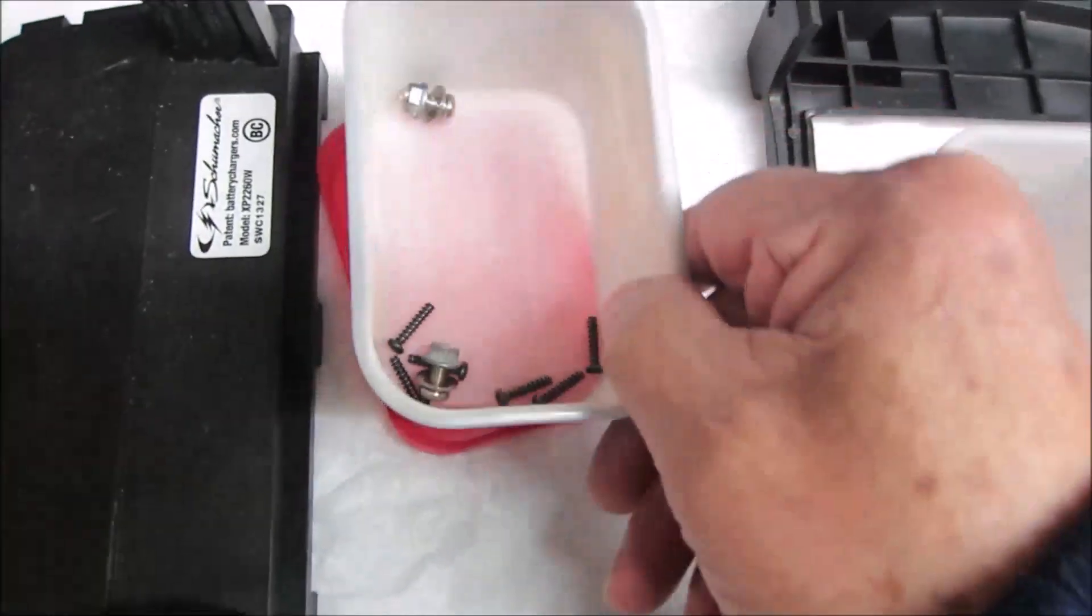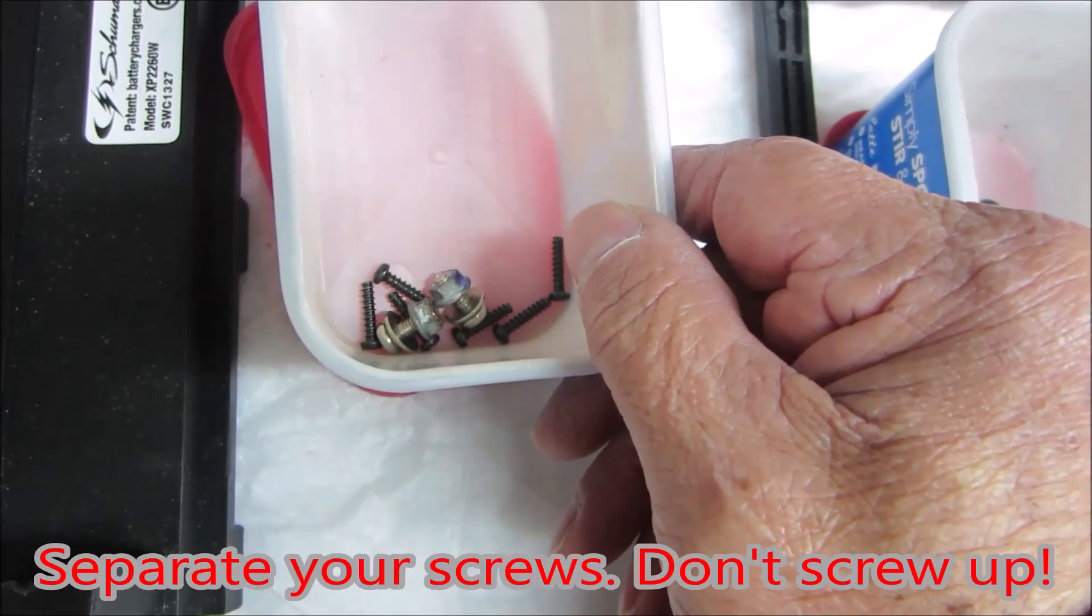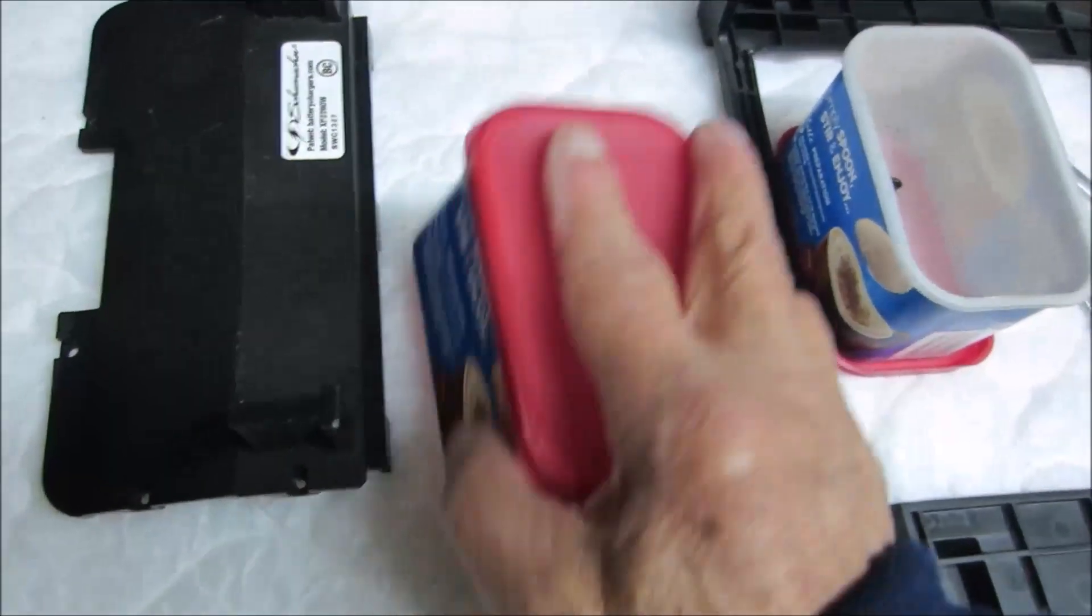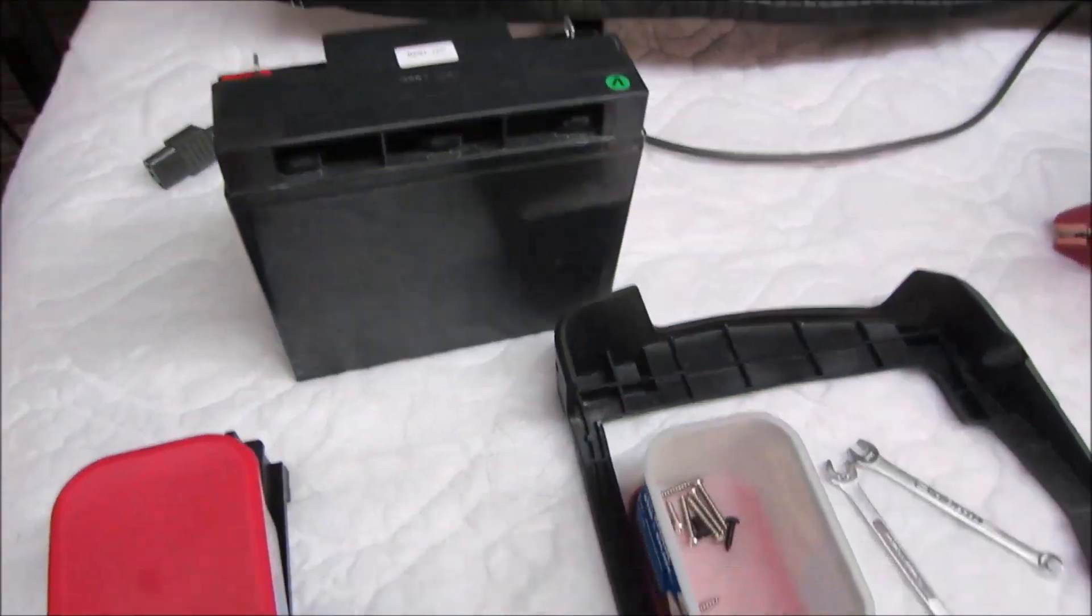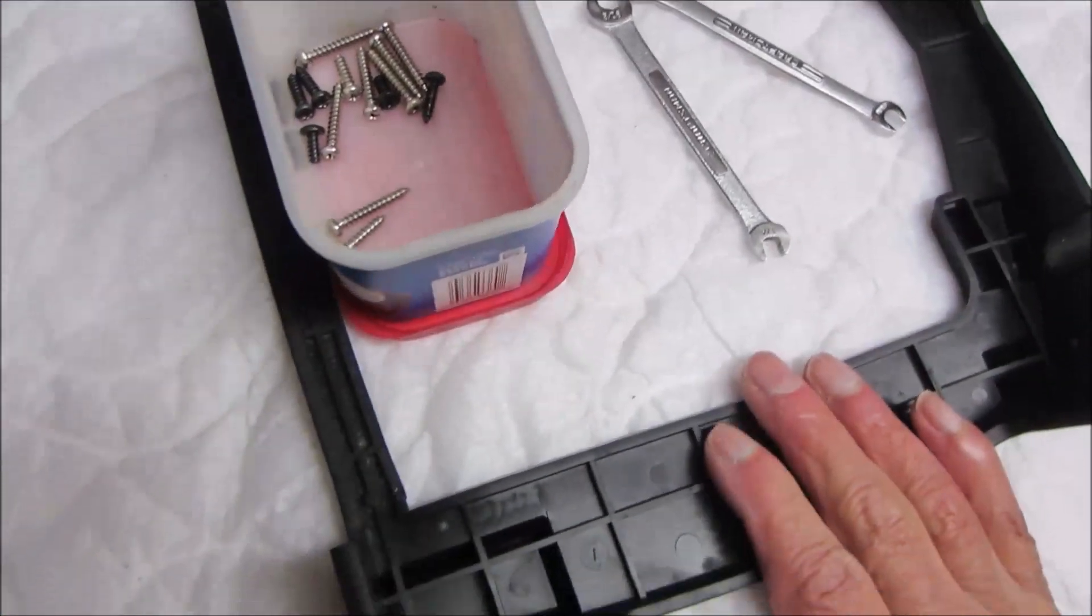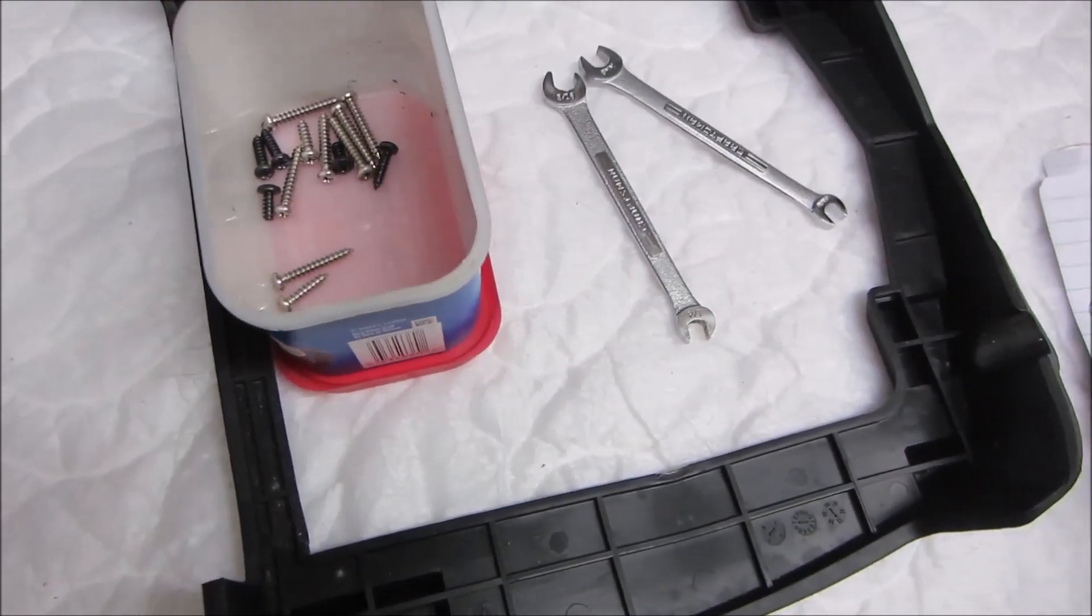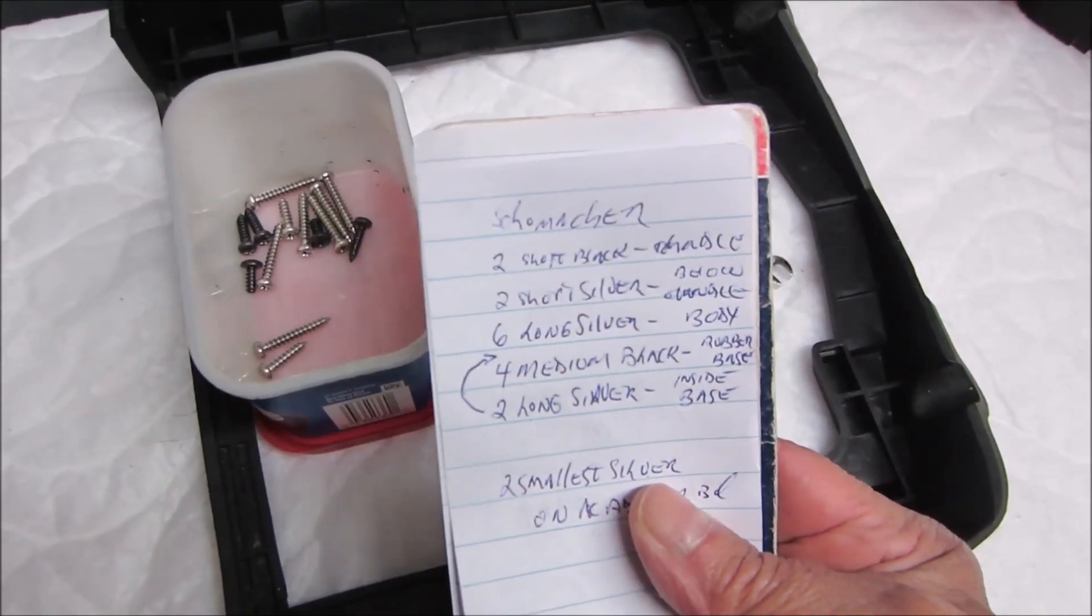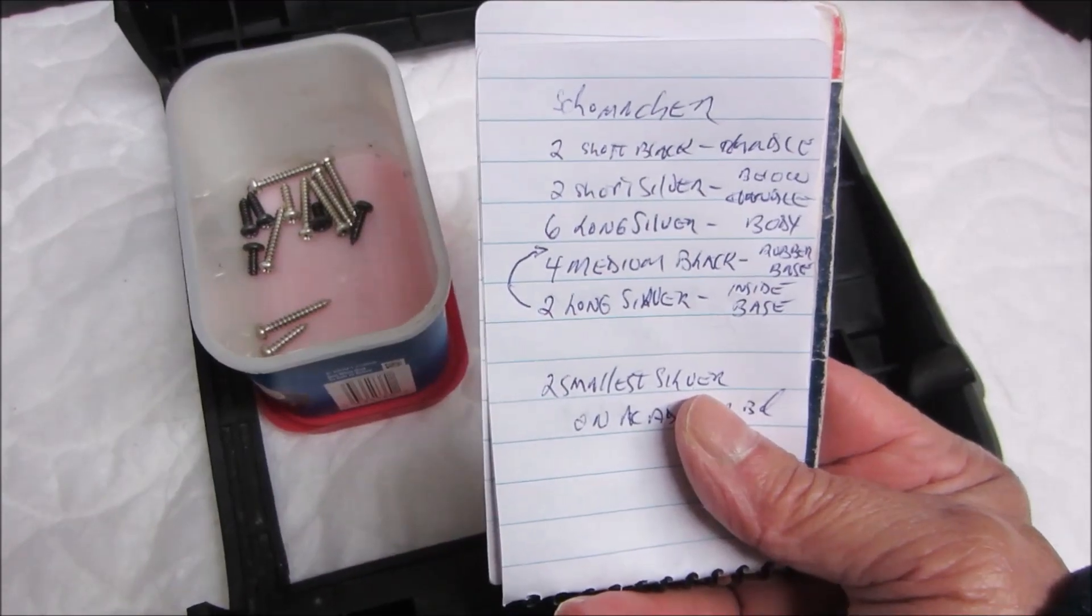Now you notice that I've segregated these screws into one container, so that makes it very easy to get this right when we put it back together. There's the screws from the battery door and the battery. Here's my battery. Now the next thing you have to do is to remove this base. Since there are so many screws in this unit, it's important to make a chart of what comes out of where.